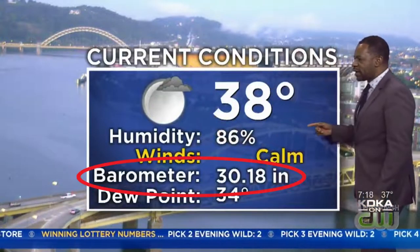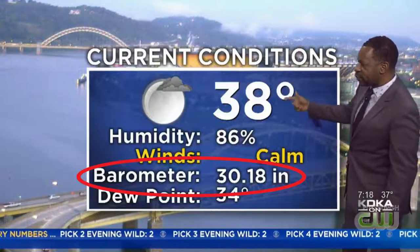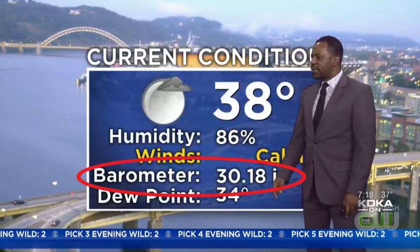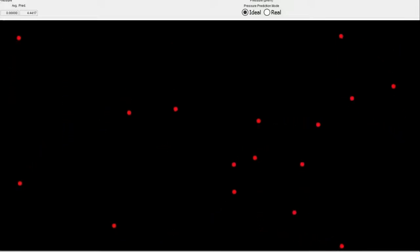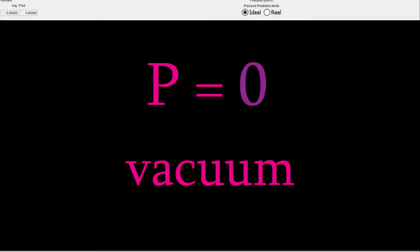Before we can talk about what Robert Boyle did, it'll be helpful to talk about what exactly pressure is. Pressure is the force that results when the molecules of a gas collide with the walls of a container. So when there are more particles, or when they move faster, the pressure is higher. On the other hand, if we were to remove all the gas until there are no molecules, the pressure would be zero, and that's what we mean by a vacuum.